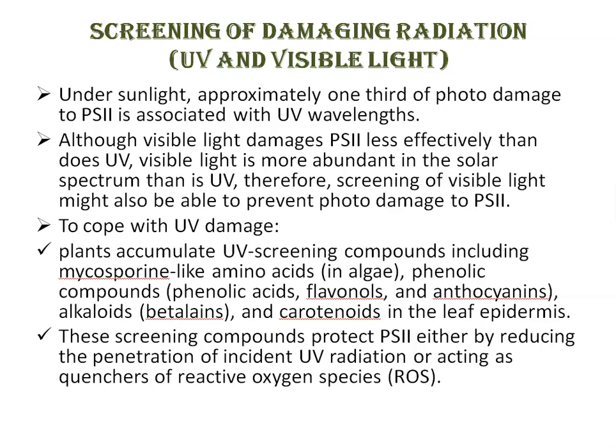Next is screening of damaging radiation — UV and visible light. Under sunlight, plants are unavoidably exposed to UV radiation that damages DNA, RNA, and proteins. Photosystem II is one of the major targets of UV damage because it is surrounded by a lipid milieu. Under sunlight, approximately one-third of photo damage to Photosystem II is associated with UV wavelengths.